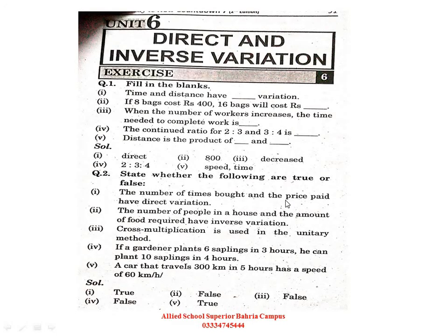Students, now we discuss Unit Number 6, Exercise 6. After definitions, we start the exercise work. Question Number 1 is fill in the blanks. 'Time and distance have direct variation.' See why — time and distance have a direct relationship because as you increase the distance, ultimately more time will be needed to reach your destination.